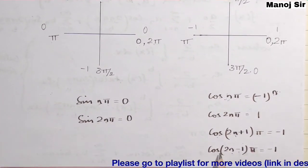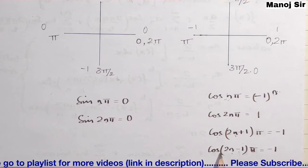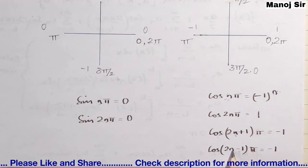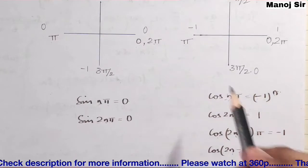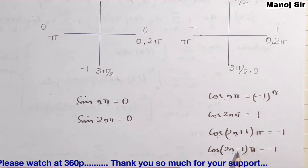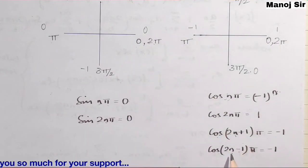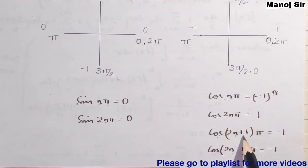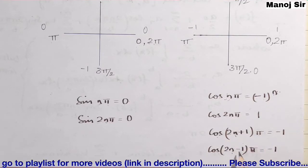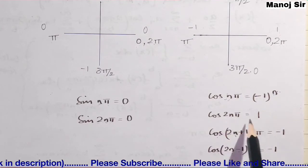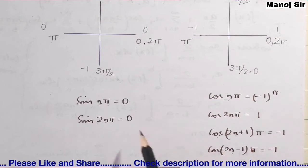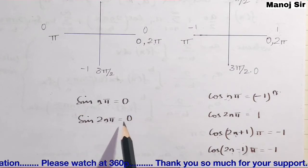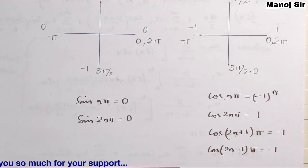Similarly, cos((2n−1)π) = −1 always. Putting n=1: cos(π)=−1; n=2: cos(3π)=−1; n=3: cos(5π)=−1. To summarize the standard results: cos(nπ)=(−1)ⁿ, cos(2nπ)=1, cos((2n+1)π)=−1, cos((2n−1)π)=−1, sin(nπ)=0, and sin(2nπ)=0.